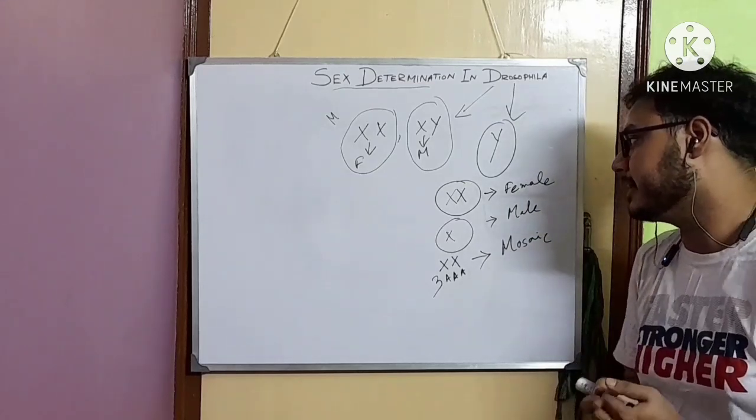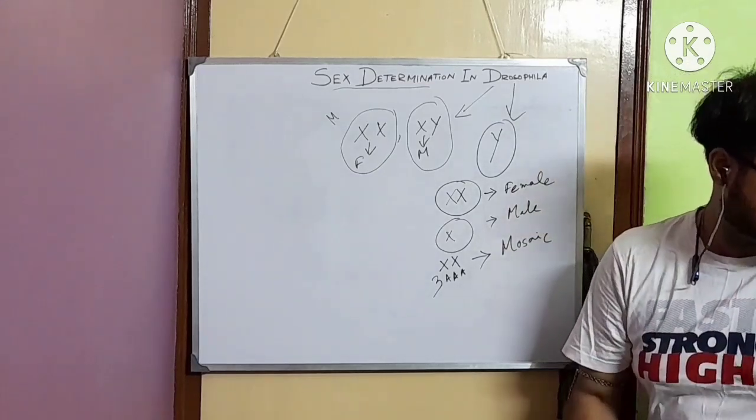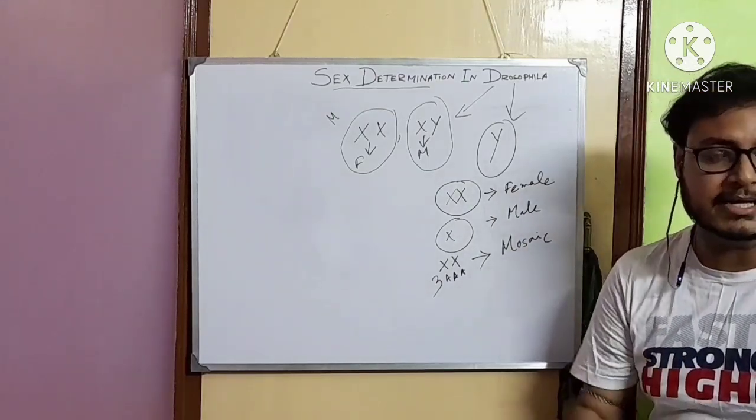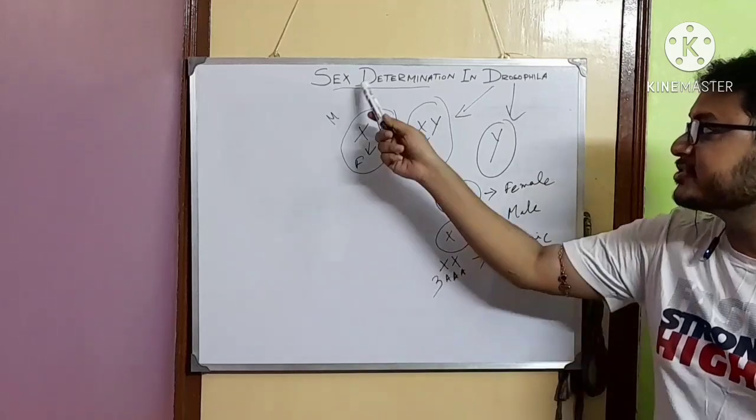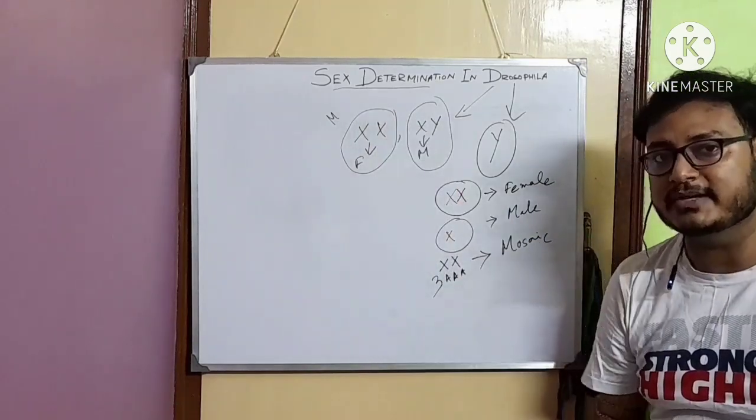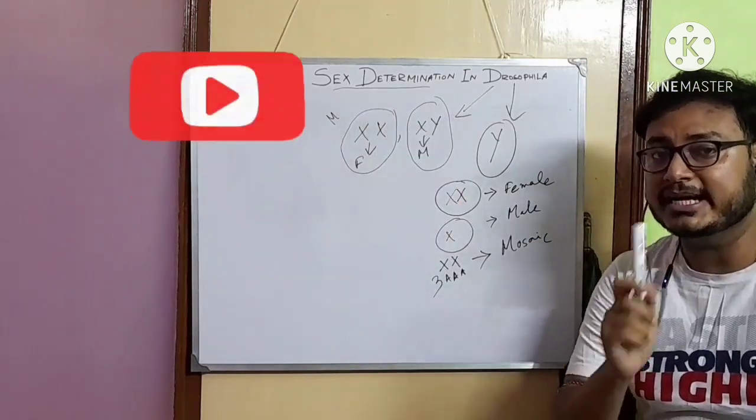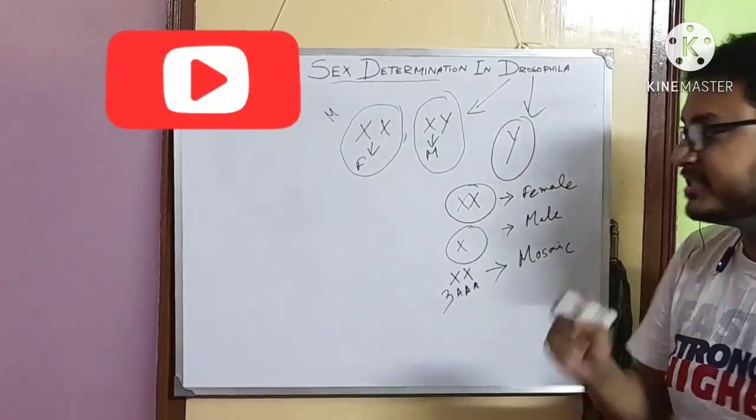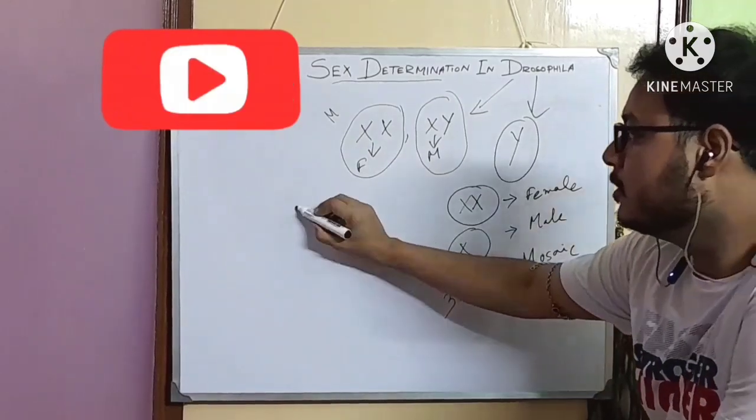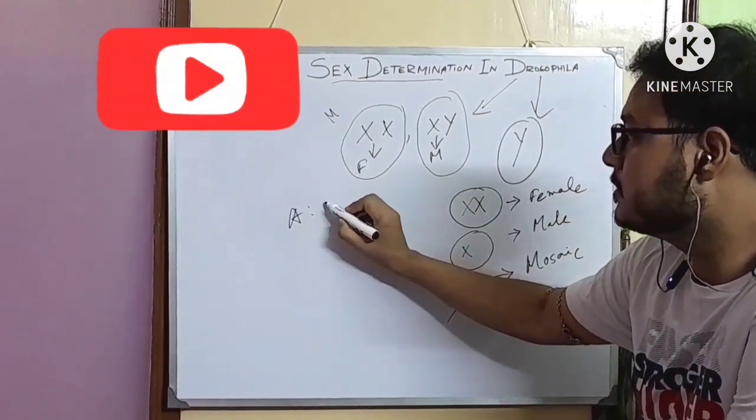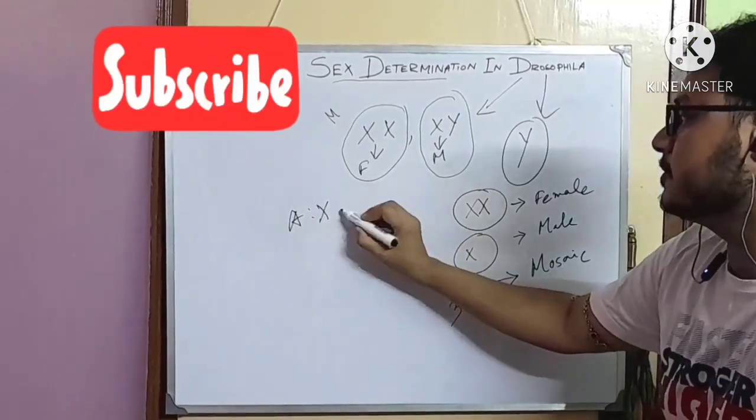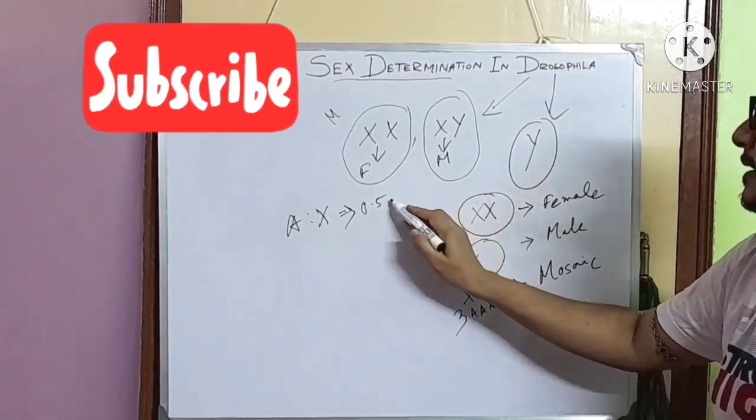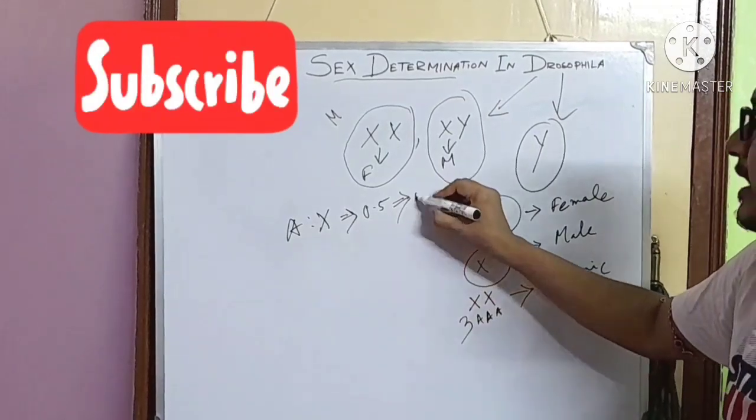Why is this happening? In 1921, Calvin Bridges postulated that the sexual fate of Drosophila depends upon the ratio of autosome to sex chromosome. If the ratio of autosome to X chromosome is 0.5, then the fly will be male.